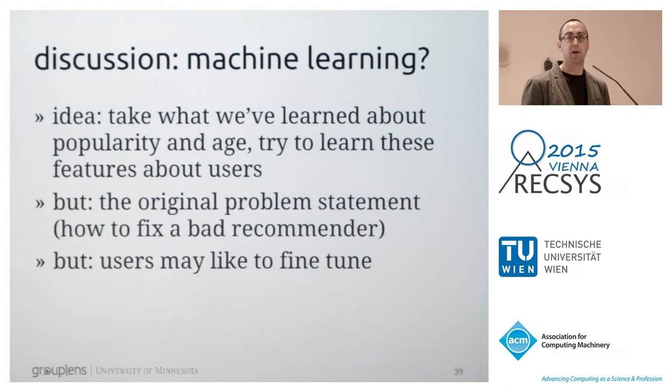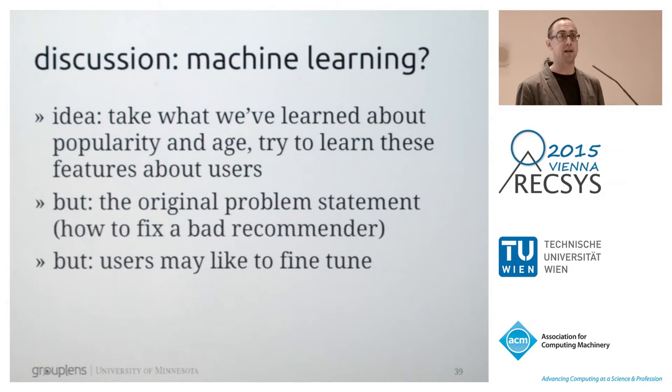We've collected evidence that users were happier when they could control the popularity and age of their top picks. Some folks would be interested in automating this process — predicting users' settings and applying them. And I think that's interesting; this preference is something that could be inferred from the data, and we have a training set. But I'd like to state why I think it's even cooler to give users control directly.